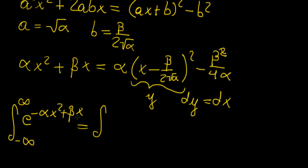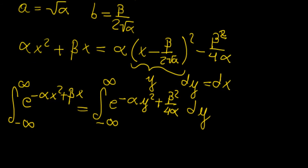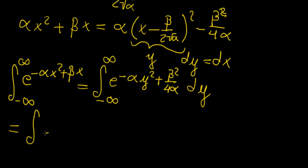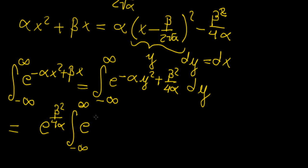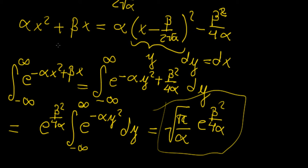So the integral from −∞ to ∞ of e^(−αx² + βx) dx is the same as writing e^(−αy² + β²/(4α)) dy. We can separate this because the term e^(β²/(4α)) is just a constant, so we take it out of the integral. Then we have e^(β²/(4α)) times the integral of e^(−αy²) dy, which we already know equals √(π/α). So the result is √(π/α) · e^(β²/(4α)) — a really nice result that's easy to derive just by completing the square.